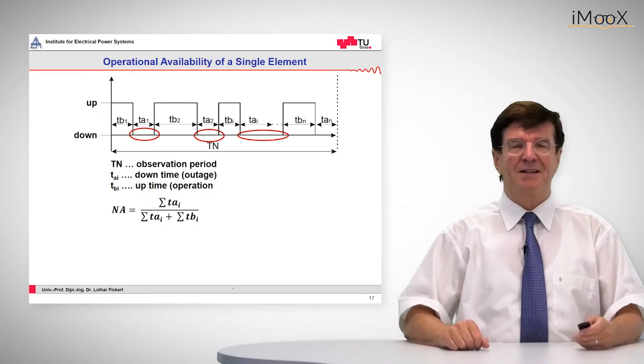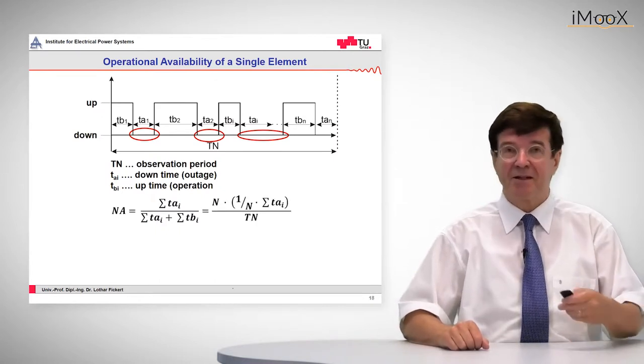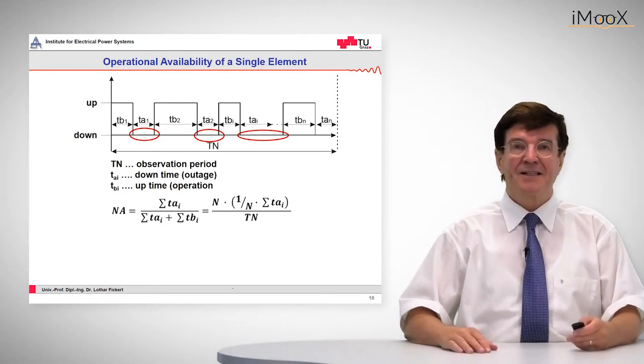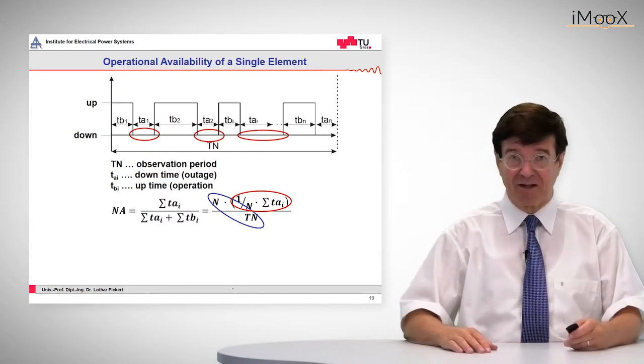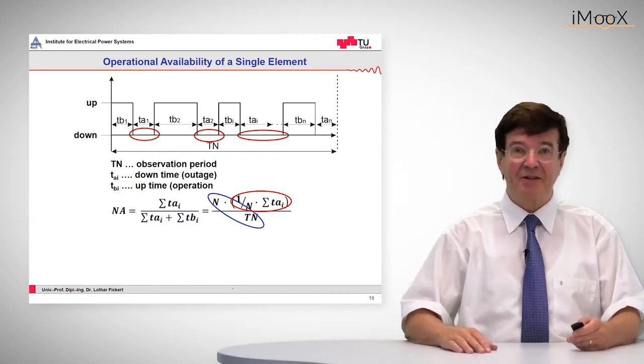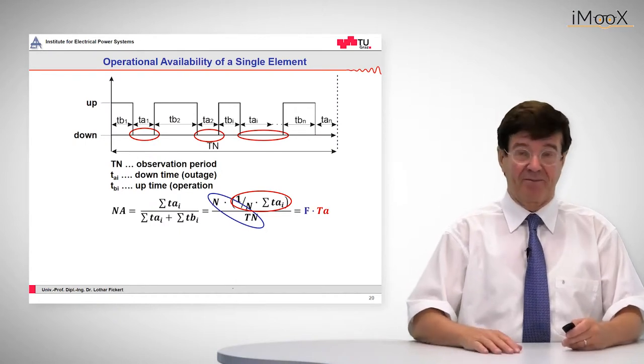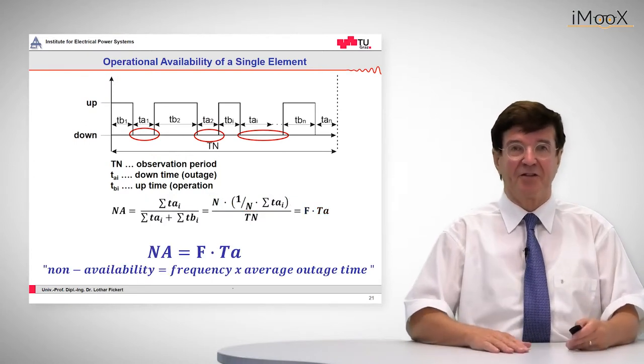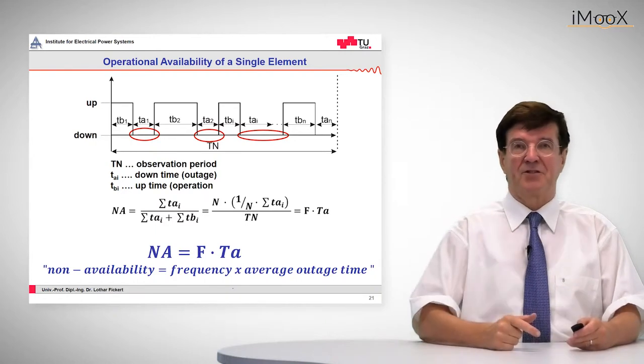By dividing and multiplying by n, we can rearrange that n divided by the total observation time is the frequency multiplied with the average outage time. So we come to the law of non-availability: non-availability is the product of frequency and the average outage time.